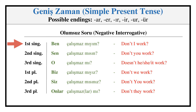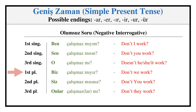Aorist — Negative Interrogative: ÇALIŞMAZ MIYİM, ÇALIŞMAZ MİSİN, ÇALIŞMAZ MI, ÇALIŞMAZ MIYİZ, ÇALIŞMAZ MİSİNİZ, ÇALIŞMAZLAR MI?